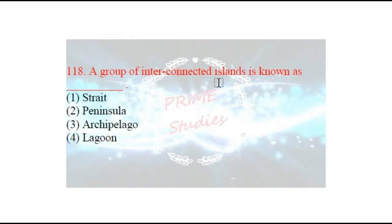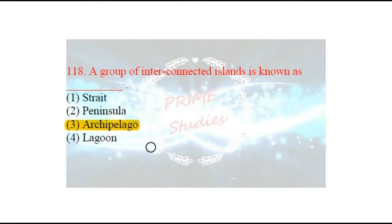Next question: a group of interconnected islands is known as what? Kai saari dweep ek group mein paaye jaate hain, toh unko kya bola jaata hai? The options are: strait, peninsula, archipelago, or lagoon. The answer is archipelago. Examples include Indonesia, Japan, Philippines, New Zealand, Maldives, Bahamas, Greece, Hawaii, and the Azores islands — ye sare ikathe hokar ek guccha sa banaye hue hain, inko hum bolte hain archipelago.